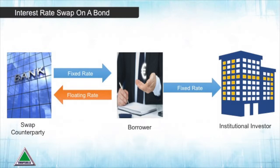The opportunity for the banker is therefore to help issue the bonds for a fee, then swap the issue from a fixed rate back to a floating rate. This simply means that the bank will make any fixed coupons or interest payments to the borrower, who can pass them on to the lender. In return, the borrower will pay a floating rate of interest to the bank.